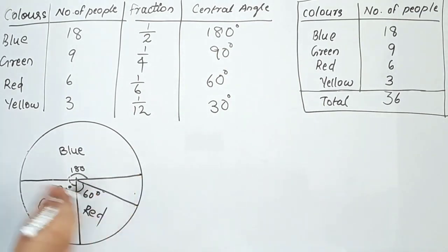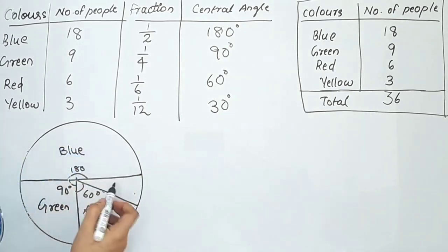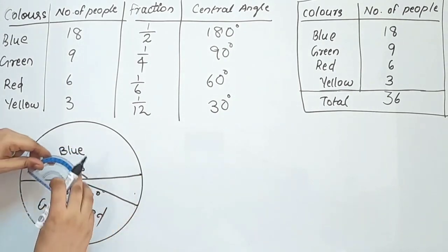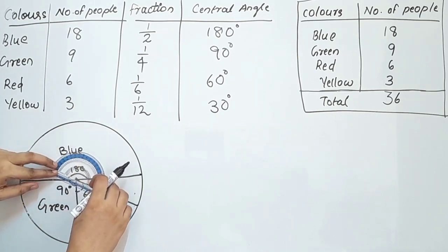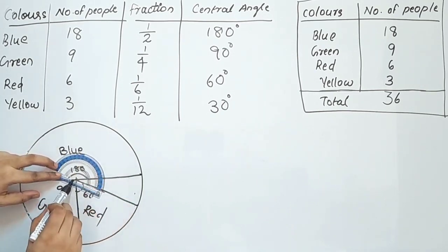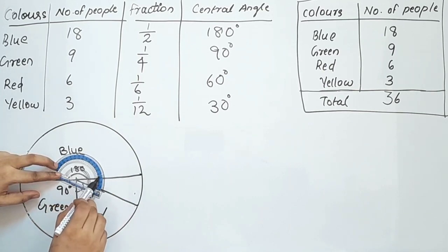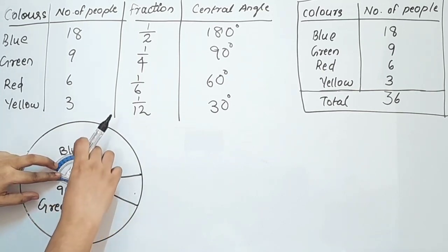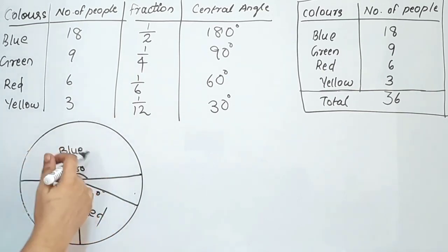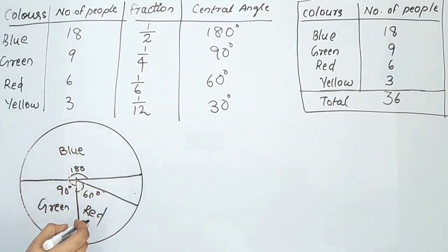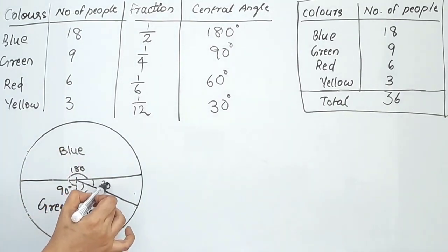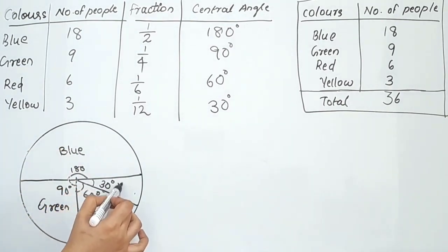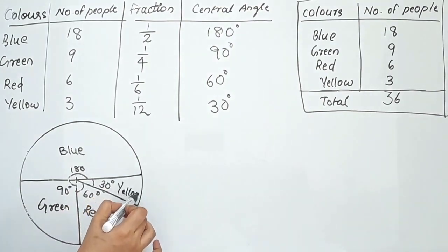We mark each sector at the center using the calculated central angles. Yellow's central angle is 30 degrees. We verify the measurements are correct — we have 30 degrees for yellow — and confirm the angles are accurate to complete the pie chart.